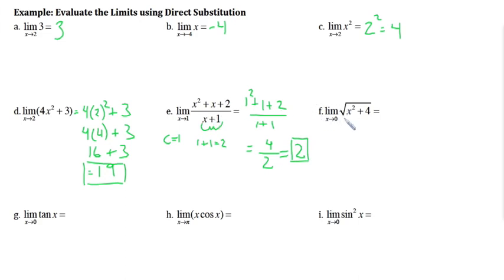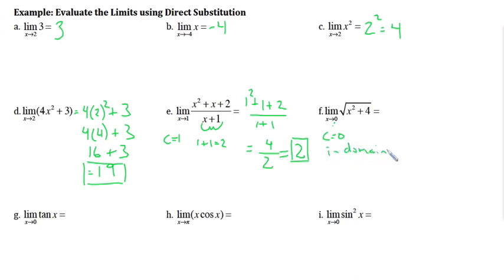Letter f has a radical. We check whether 0 is in the domain — the only concern is whether 0 makes the inside negative. Zero squared is 0 plus 4, which is positive, so 0 is in our domain. Using direct substitution: the square root of (0² + 4) equals the square root of 4, which is 2.